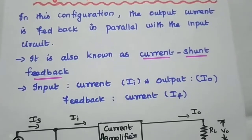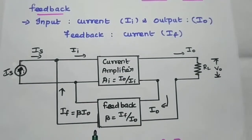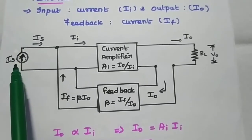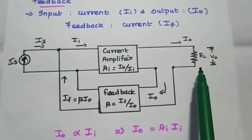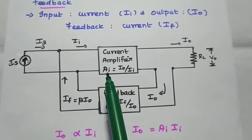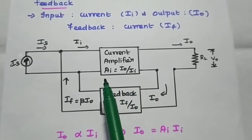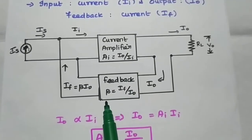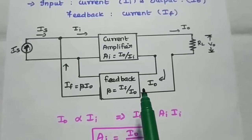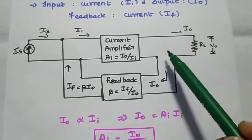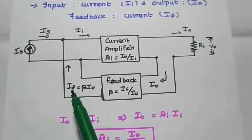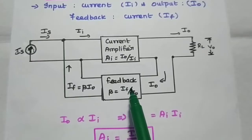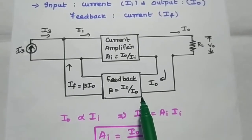Here input is a current, output is a current, and feedback is also a current signal. This is the diagram of shunt series feedback topology. Here the input is a current signal, so we can use a current source. Here the output is also a current signal. Hence, we can consider the amplifier as a current amplifier with a gain ai equal to output current divided by input current. Then the feedback network has a factor beta equal to output divided by input. Here for this feedback, the input is the output current from this current amplifier and the output is the current feedback signal. So beta equals output current if divided by input current io.